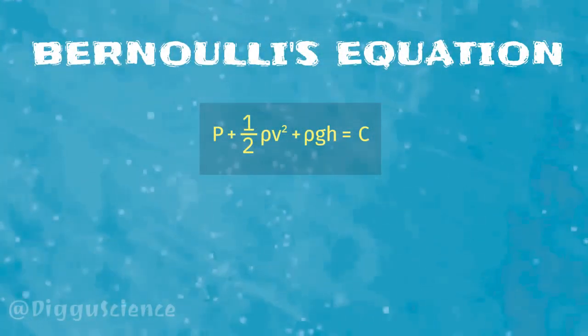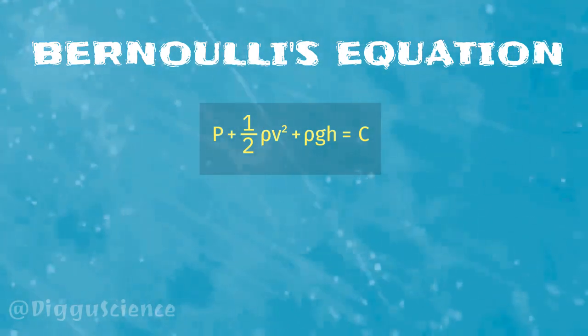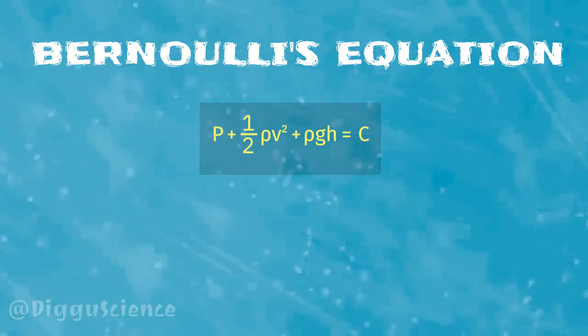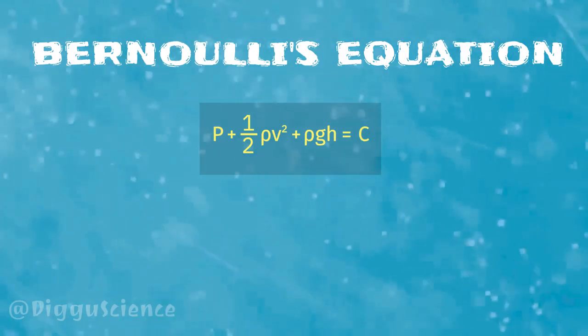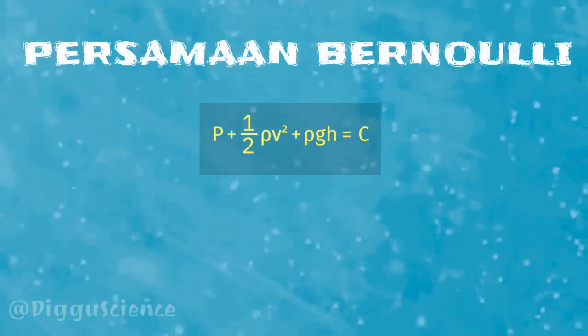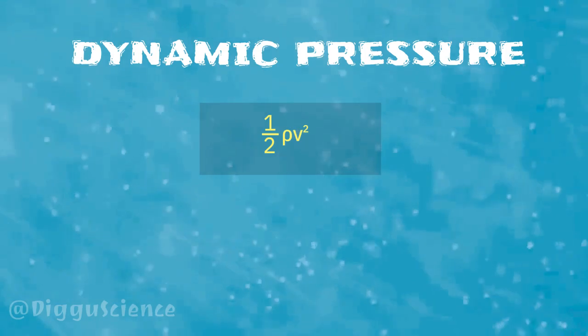If we relate it to Bernoulli's equation, P plus half rho V squared plus rho GH is equal to a constant. The half factor rho V squared represents the dynamic pressure.